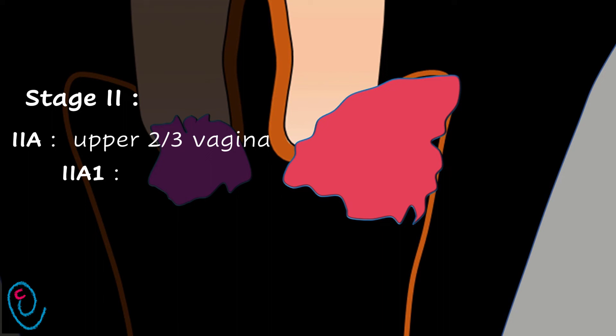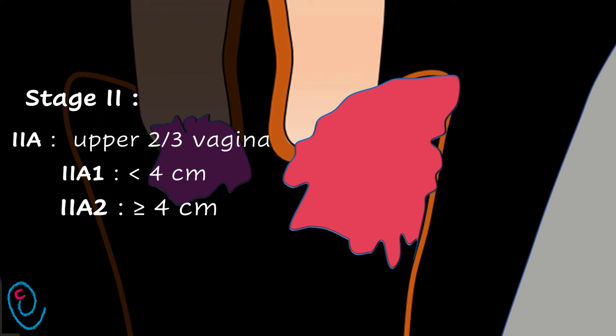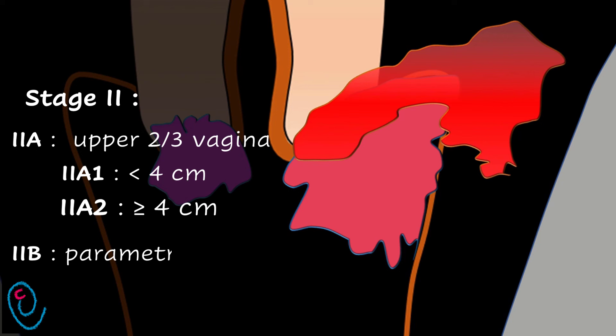If tumor size is less than 4 cm, it is stage 2a1. If tumor size is 4 cm or more, it is stage 2a2. When it invades the parametrium but does not reach the pelvic side wall, it becomes stage 2b.